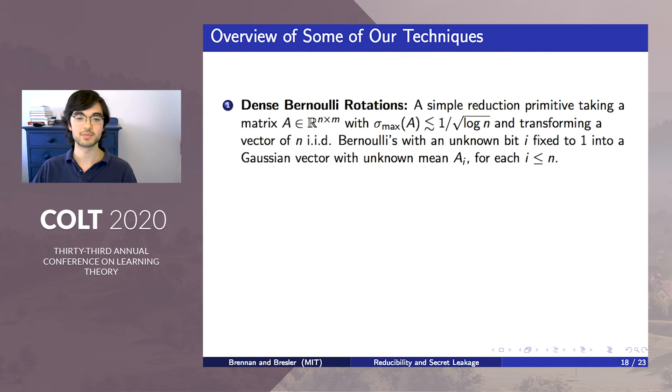This is a simple but flexible primitive that approximately takes a vector of iid Bernoullis with an unknown bit i conditioned to be 1 and transforms them into a Gaussian vector with an unknown mean ai. In this primitive, we have the ability to choose the vectors a1 through an as long as their singular values are bounded above by 1 over root log n. We typically apply this primitive many times to local blocks of the input PC-rho instance, and the key is usually choosing the ai.